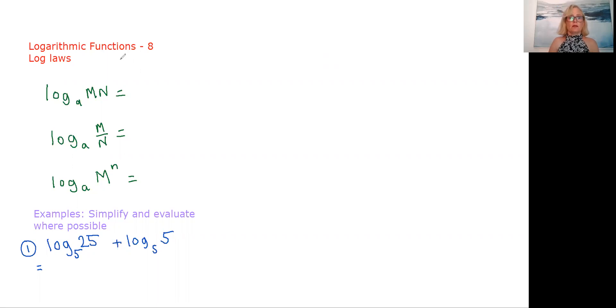All right, this one here: if I want to have a rule for the log of capital M times capital N to base A, I'm multiplying powers, aren't I? If I'm multiplying powers, thinking back to our index laws, what are you doing to the indices? You are adding them, aren't you? So this is log of M to base A plus log of N to base A.